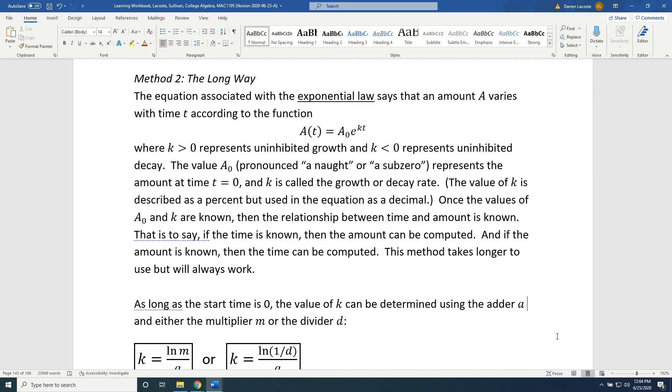The value A₀ is an amount, the starting amount, the amount when the time is 0. And k is called the growth or the decay rate.